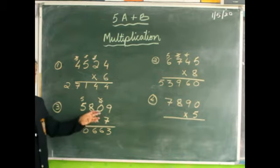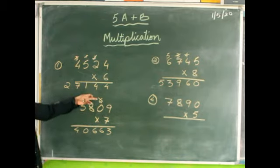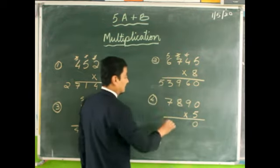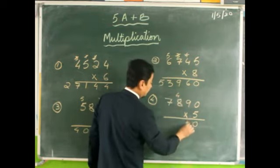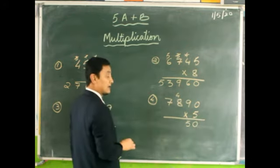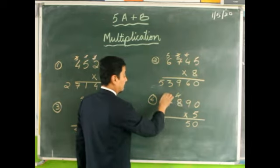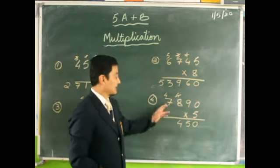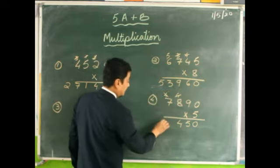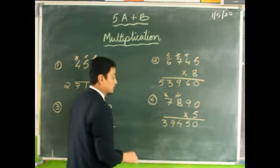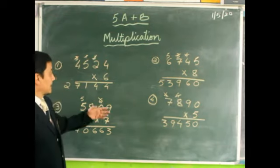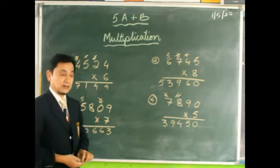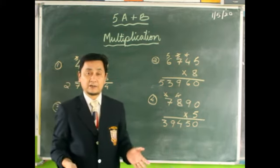Let's do the last one: 5890 multiplied by 5. Five zeros are 0. Five nines are 45, write 5 carry 4. Five eights are 40; 40 plus 4 is 44. Five sevens are 35; 35 plus 4 is 39. I hope children you have understood the concept of multiplying by a single-digit number.